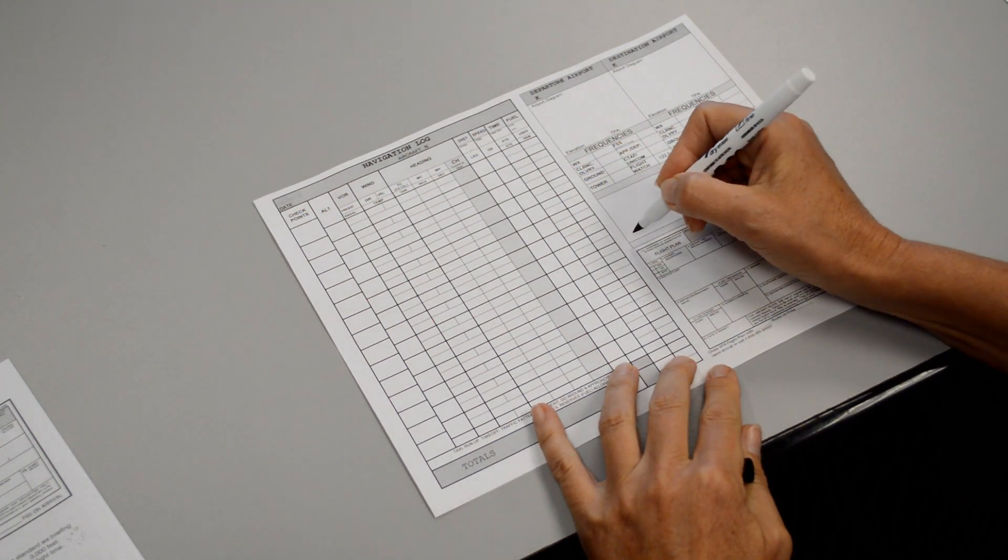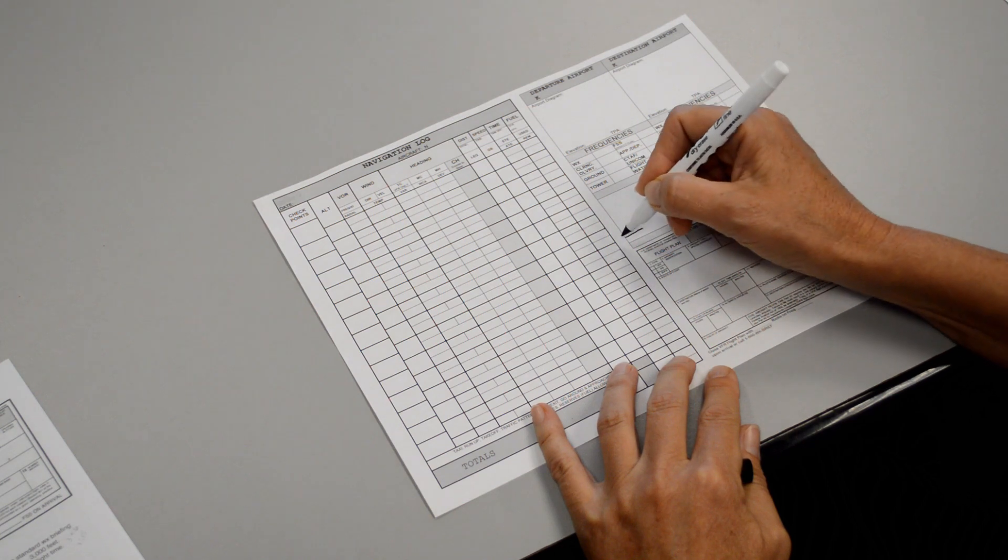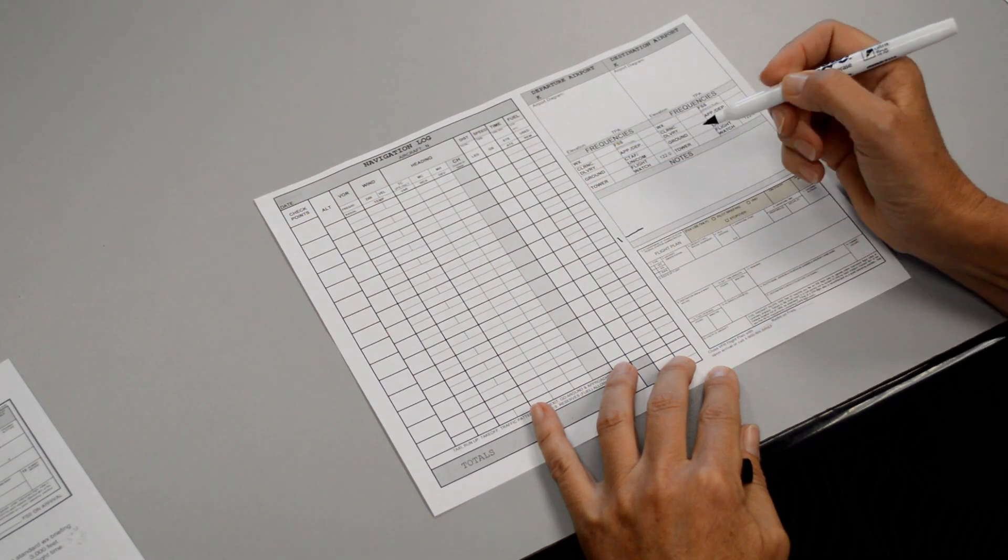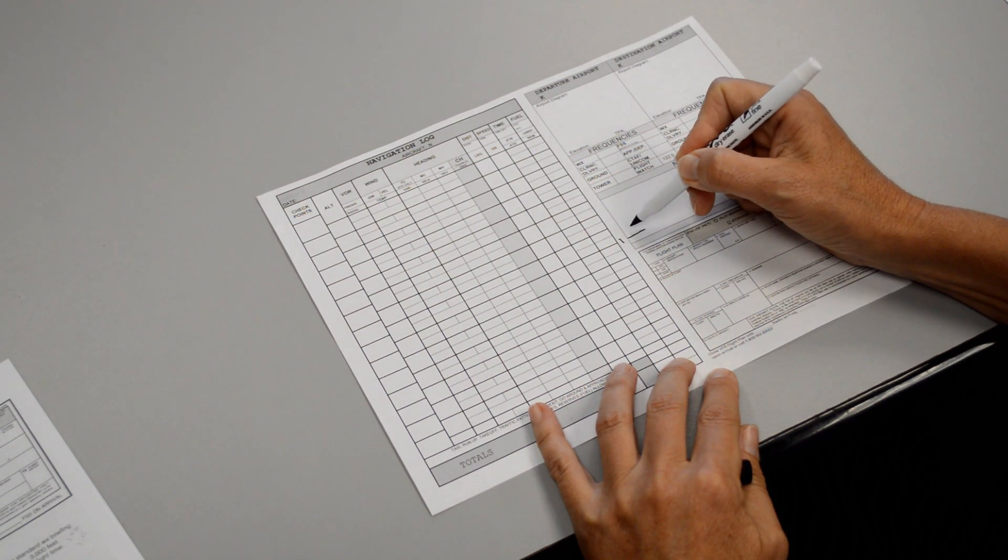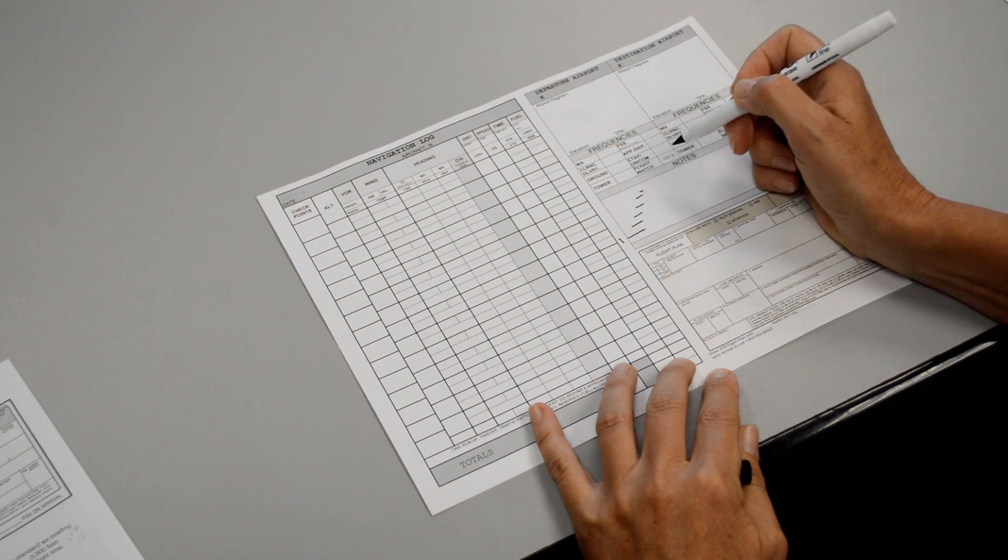We want to depart from a field elevation of 1,000 feet. So we will say this is 1,000 feet and we're going to climb up to 2,000 feet, 3,000 feet, 4,000 feet, 5,000 feet plus 500.